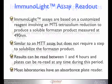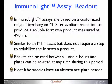Now let's take a look at the individual types of readout. First, the ImmunoLight assay. ImmunoLight assays are based on a customized reagent involving an MTS tetrazolium reduction to produce a soluble formazan product that's measured at 490 nanometers. It's similar to an MTT assay but does not require a step that solubilizes the formazan product. Results can be read between one and four hours, and plates can be re-read at any time during this period.